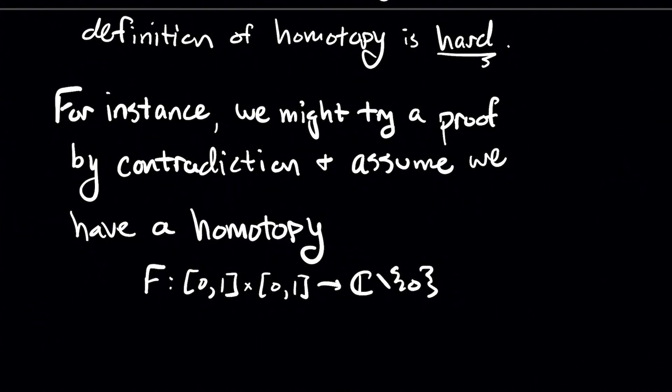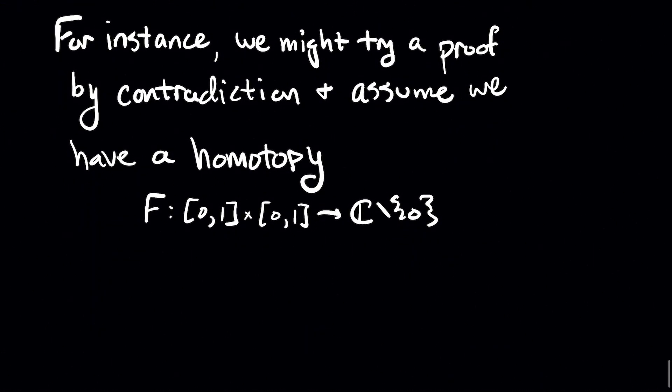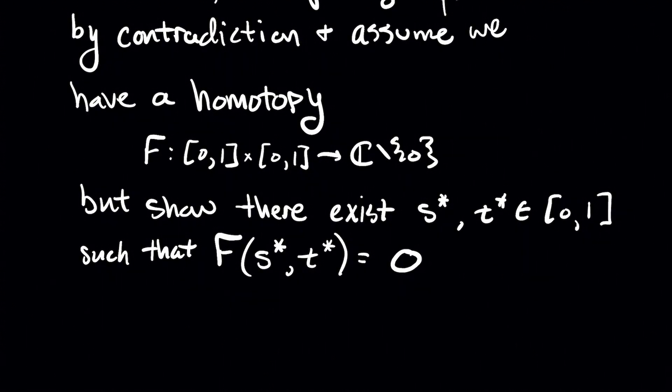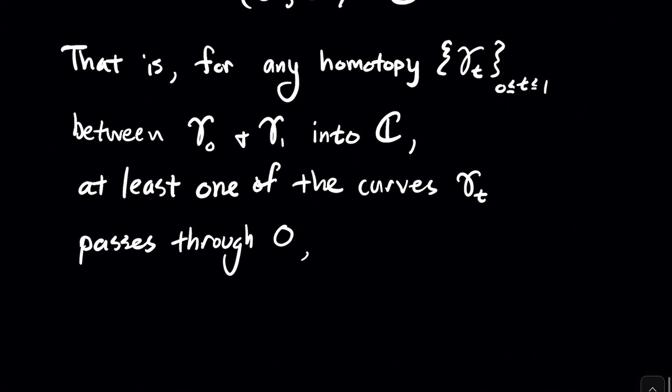And maybe we assume that you have a homotopy f that maps into the complex numbers minus the origin, our space. And what we would try to do probably to get our contradiction, we would probably try to show that one of the paths crosses through the origin. There exists some (s*,t*) such that f of (s*,t*) gives you the origin. And that's of course a contradiction because the origin is not in our space. That can't be an output.